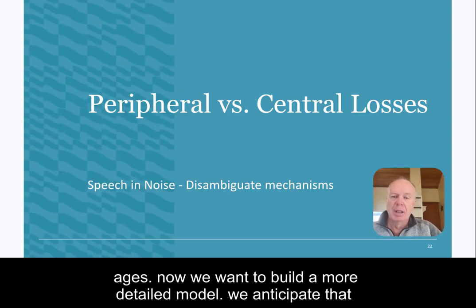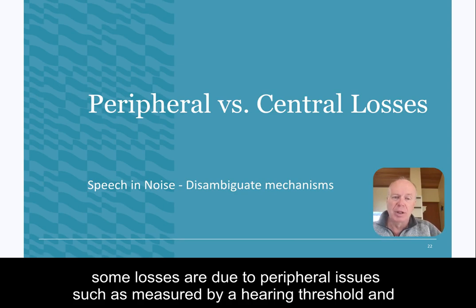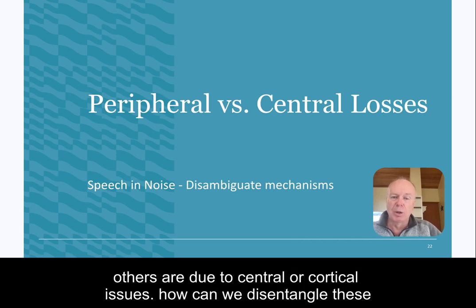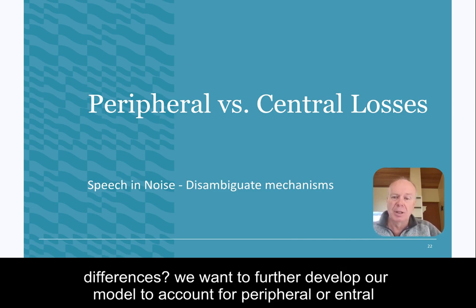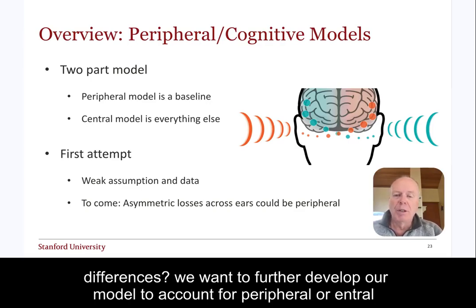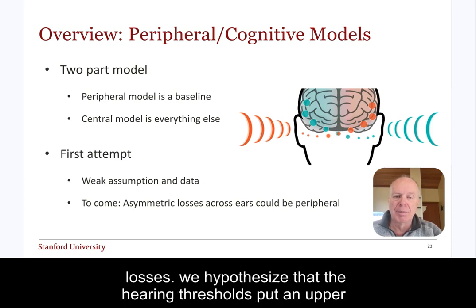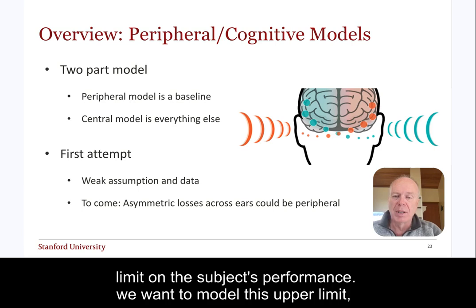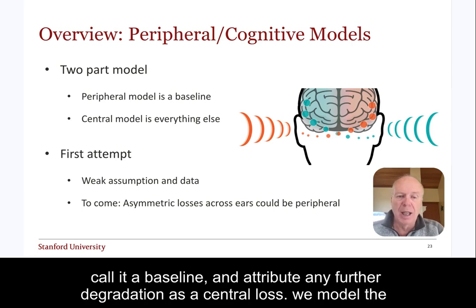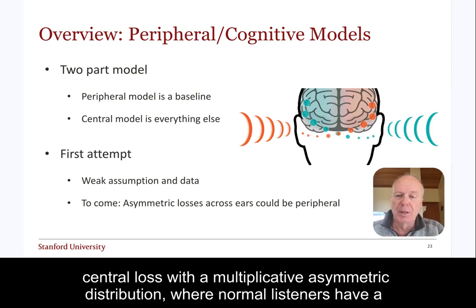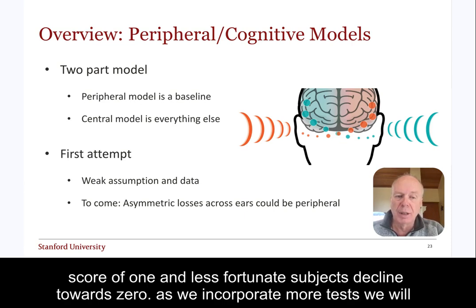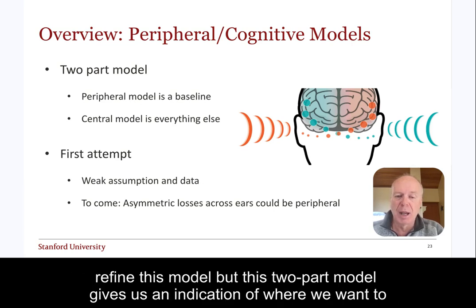Now we want to build a more detailed model. We anticipate that some losses are due to peripheral issues, such as measured by a hearing threshold, and others are due to central or cortical issues. How can we disentangle these differences? We hypothesize that the hearing thresholds put an upper limit on the subject's performance. We want to model this upper limit — call it a baseline — and attribute any further degradation as a central loss. We model this central loss with a multiplicative asymmetric distribution, where normal listeners have a central score of 1 and less fortunate subjects decline towards 0.